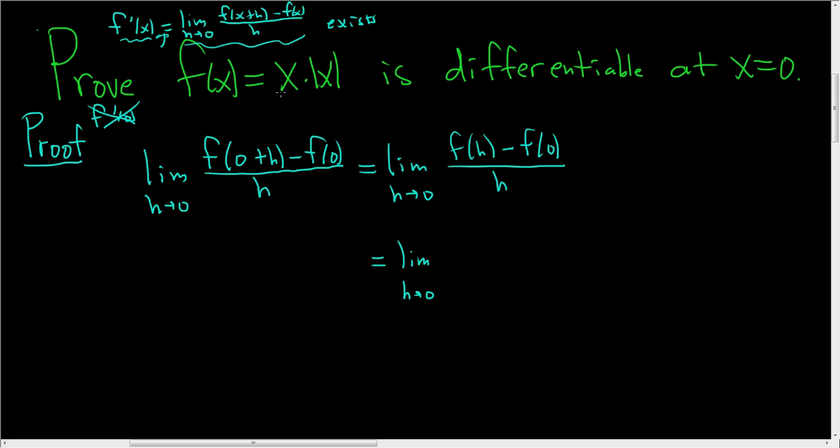f(h)—well, here's f(x), so we just replace all the x's with h's. So this is h|h| minus f(0). Well, if you plug in 0, you simply get 0. That's all being divided by h. So this is the limit as h approaches 0 of h|h|/h.